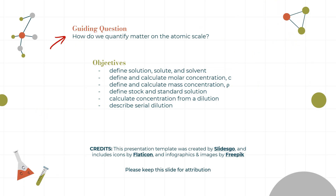On that note, we have accomplished our guiding question — quantifying matter on the atomic scale. We defined solution, solute, and solvent; discussed molar and mass concentrations; defined stock and standard solutions; calculated concentrations from dilutions — memorize C₁V₁ = C₂V₂ — and explored serial dilutions. Great work today.